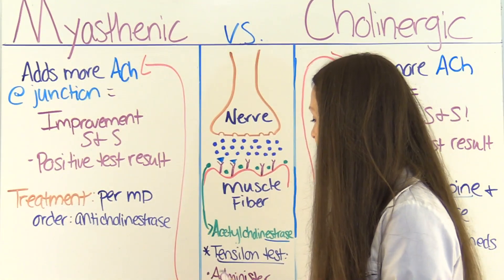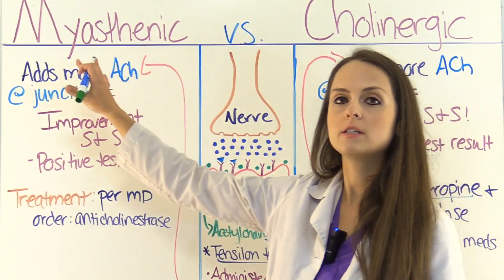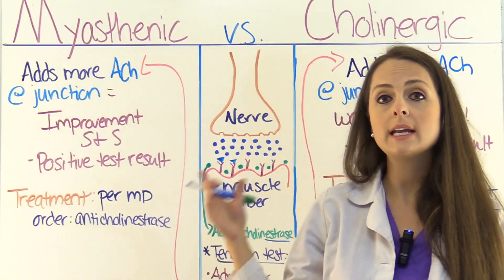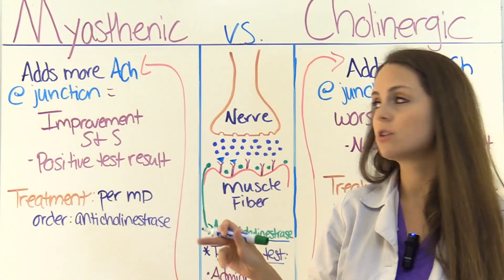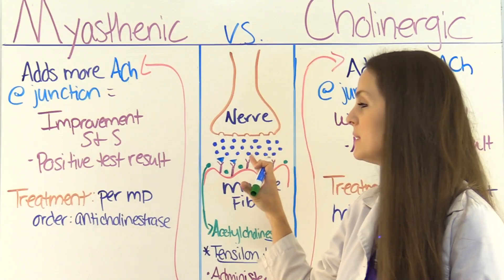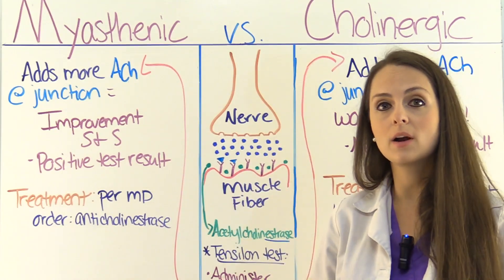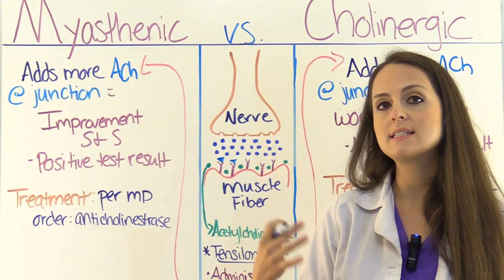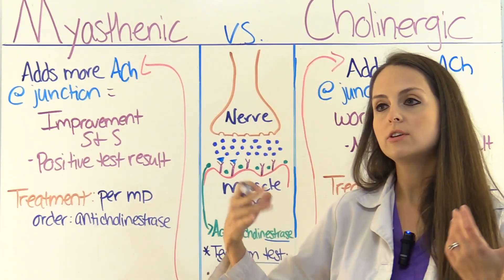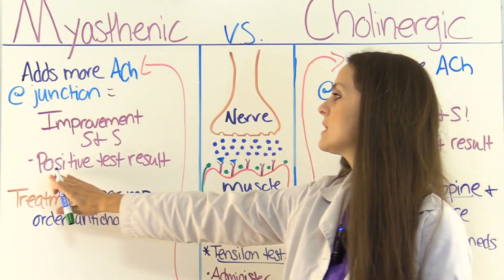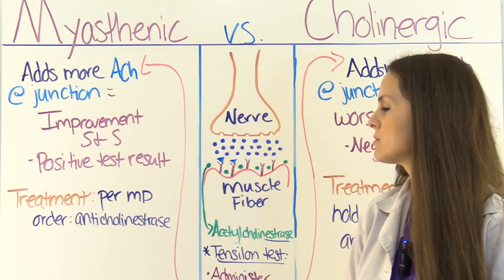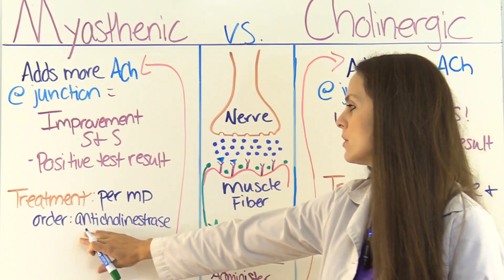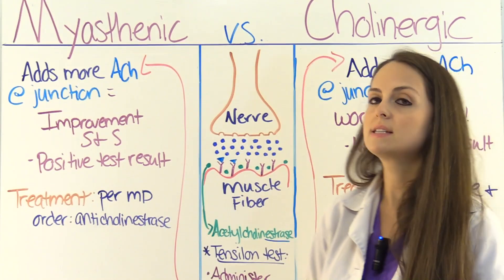If we give edrophonium to a patient in a potential myasthenic crisis, we're adding more acetylcholine at the neuromuscular junction, which is great because they need more of it. So they're actually going to have improvement of their signs and symptoms and look and feel better — the test result would be positive. Treatment per the MD order would be ordering more anticholinesterase medication.